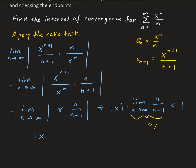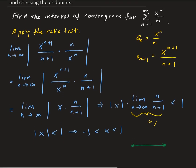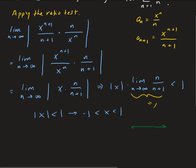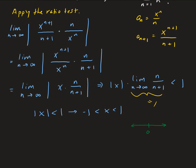Solving for this, it's the same thing as minus 1 less than x less than 1. From here we can tell that the radius of convergence is going to be 1. The series has been expanded about 0 — this is a Maclaurin series — and we have our points from minus 1 to 1, so the radius is equal to 1.